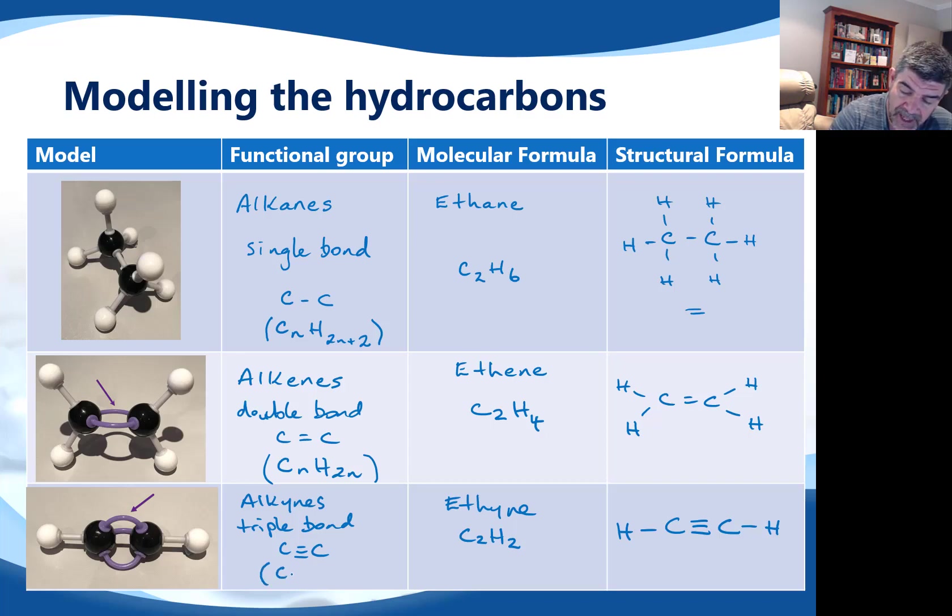The formula then for the alkynes is CnH2n-2. Again, the extra bond has taken away two more hydrogens, and so now we're subtracting those two hydrogens, and that will give you the formula for any member of the ethyne group. It's also fairly clear, I hope, that there's no C1 version of an alkene or an alkyne. You have to have at least two in order for the double and the triple bond to be present. We can't have doubles or triple bonds involving hydrogens, because hydrogen only bonds to one other atom and with only one other bond.